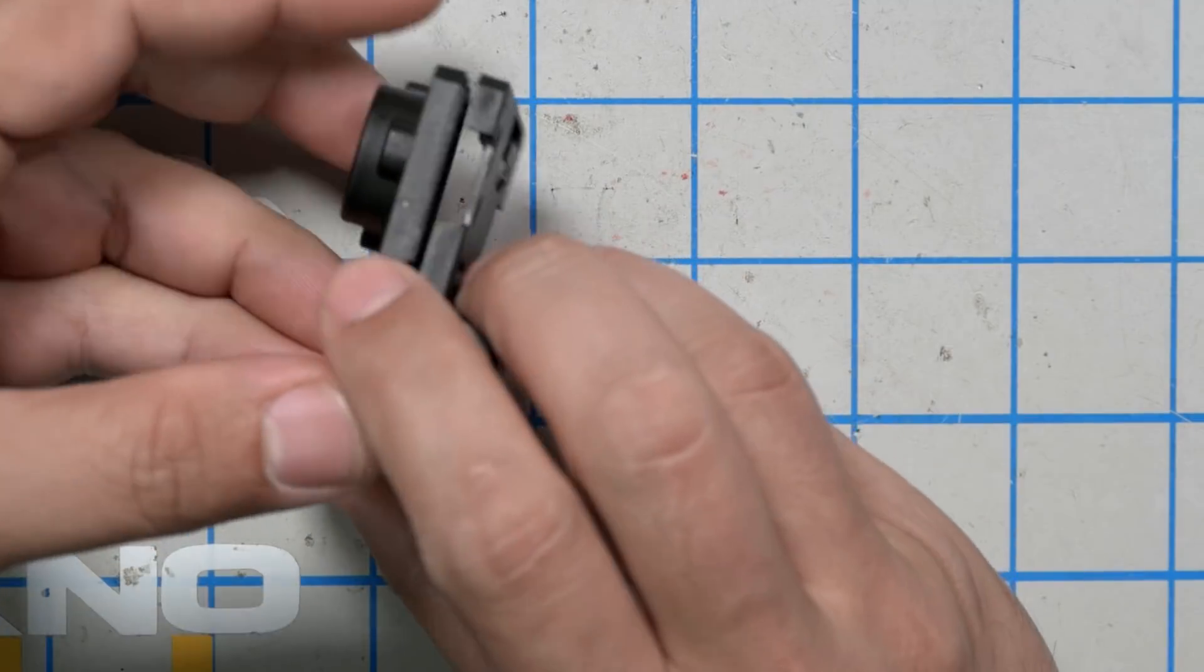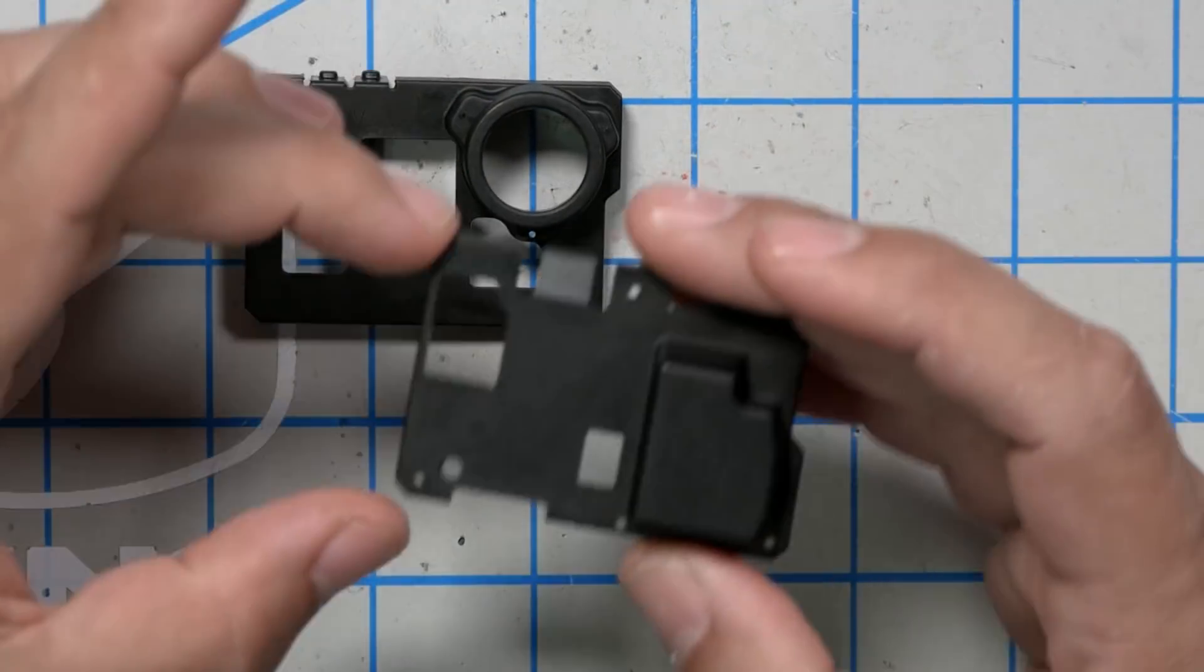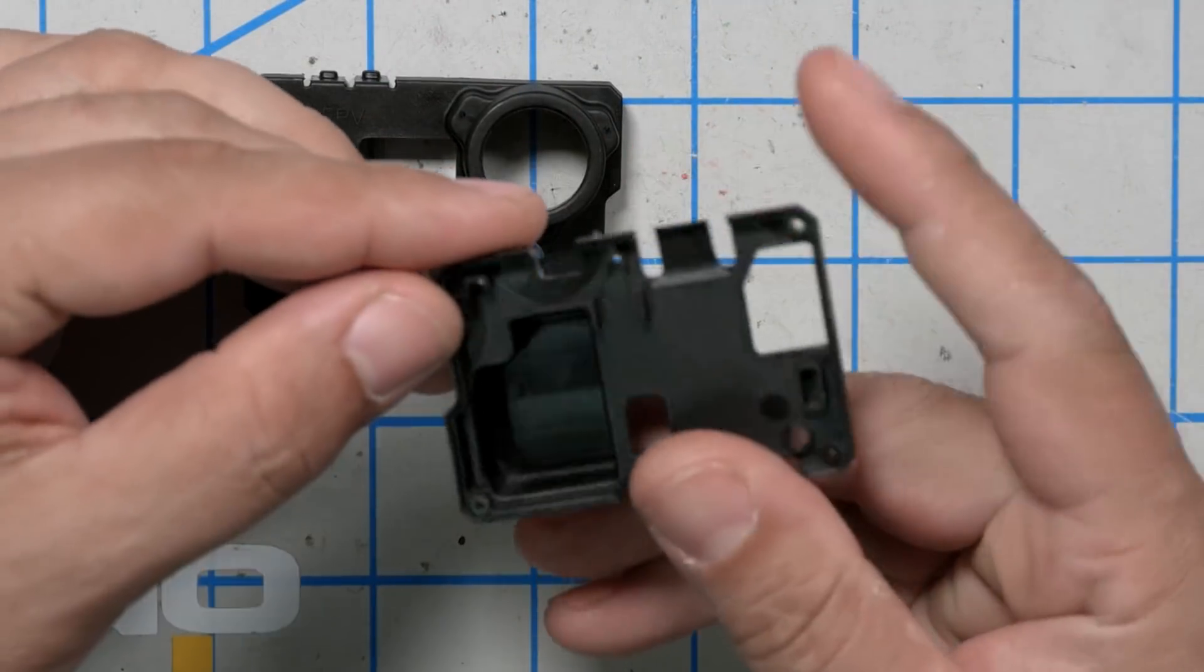This is the actual product we're working with today. Beta FPV has made a stripped-down case. This is actually injection molded. There's a link to the case down in the video description if you want to do this.